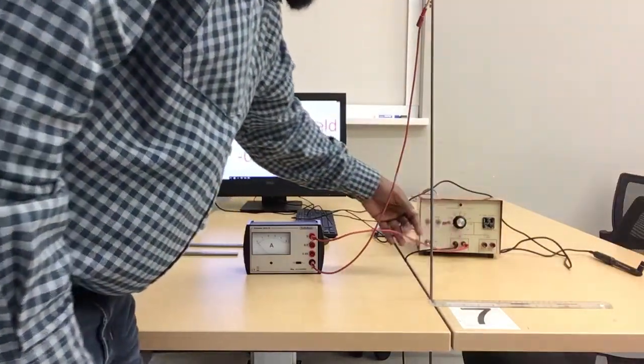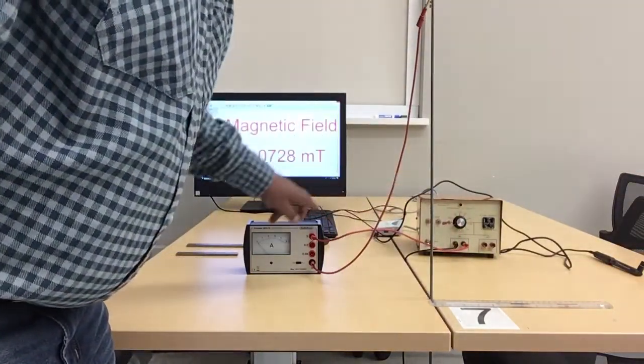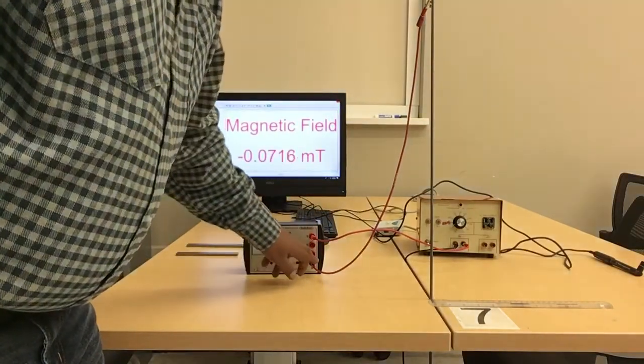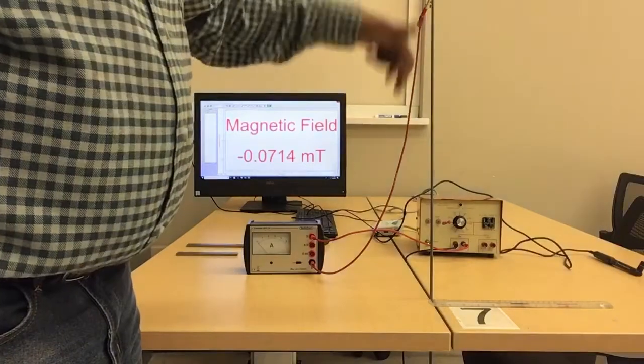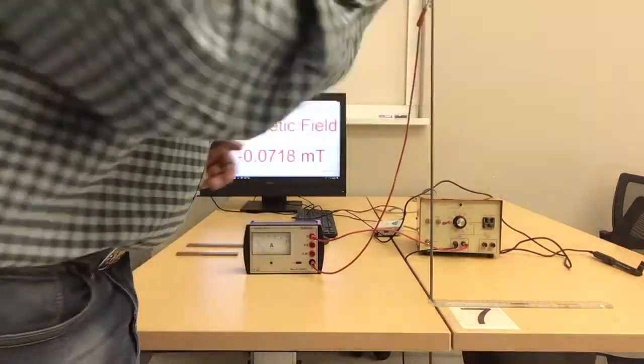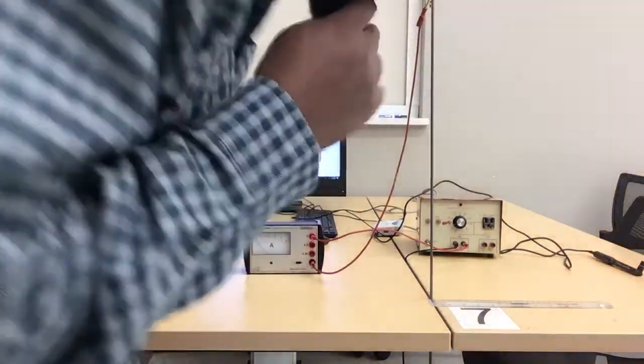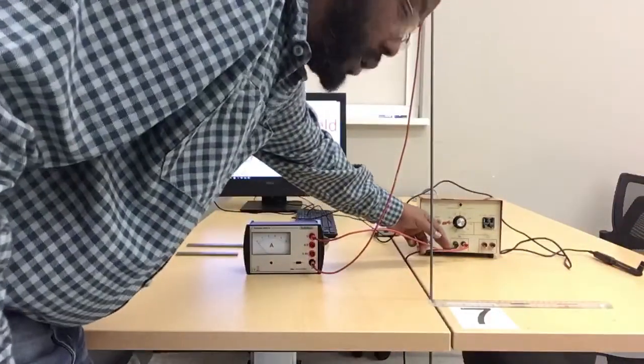So this current comes out of this source and goes through the ammeter, and from the ammeter it goes into this long wire. So when the current passes through this wire you get a magnetic field produced and that current goes down here and it goes back to the source here.